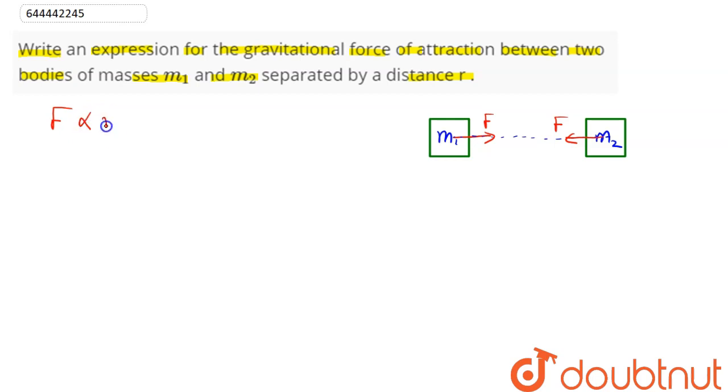This proportionality implies that this combined proportionality can be written out as F proportional to m₁m₂ divided by r². We can say here the constant of proportionality introduced here is G, which is known as universal gravitation constant.